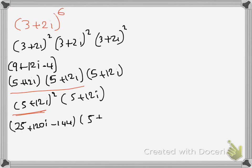Times 5 plus 12i, times 5 plus 12i. So if I simplify that, it gives me negative 119 plus 120i times 5 plus 12i.